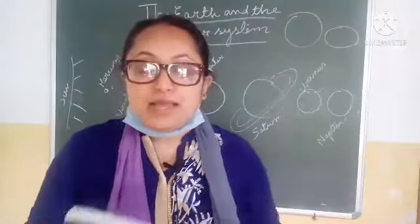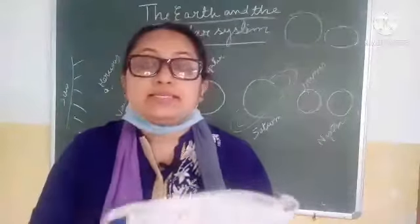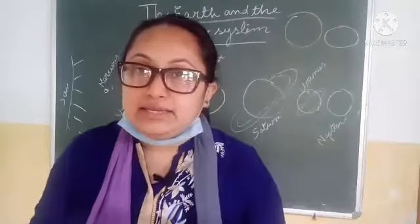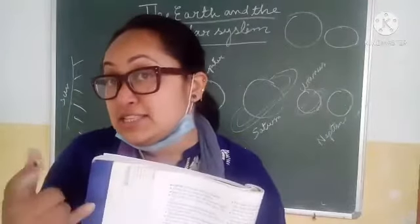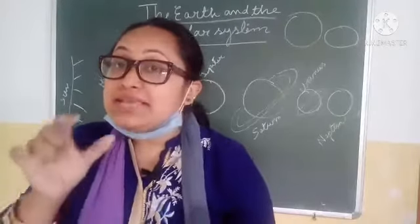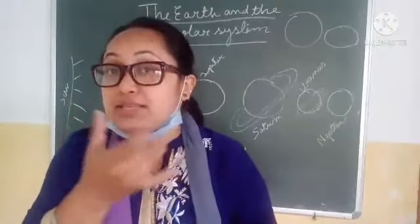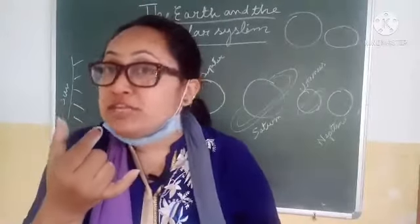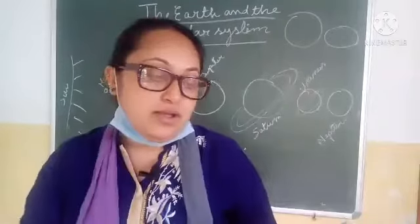Now let us study about satellites. The word satellite means a companion or attendant. For example, Jupiter is a big planet and around it there are 53 satellites, which are its moons — these are the companions of Jupiter.